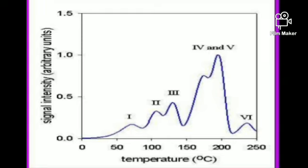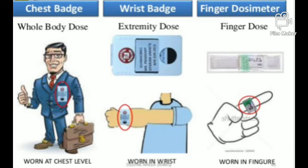Keep in mind that the badge is worn not only at the chest level but also on the head, finger, and wrist. Those working in diagnostic radiology will wear the chest-level badge. Those working in nuclear medicine, radiotherapy, or other radiation-exposed areas will additionally wear all badge types. There are also TLD devices for the eyes, used in radiotherapy to record how much dose the eyes have received.